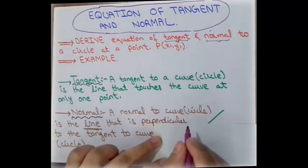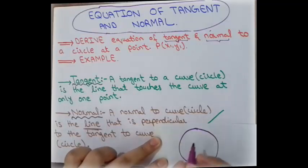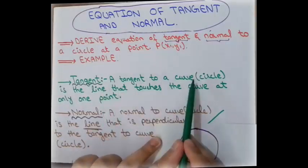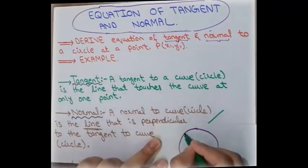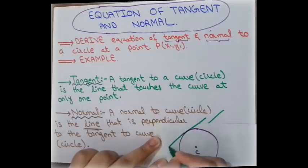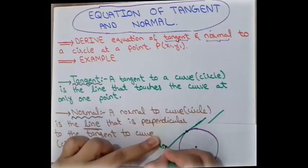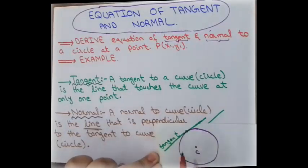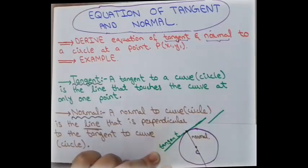To understand these two concepts using a diagram: if we have a circle with its center, the tangent is the line that touches the circle at only one point. If we then draw a line perpendicular to that tangent at the point of contact, that perpendicular line is called the normal.